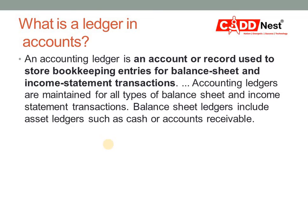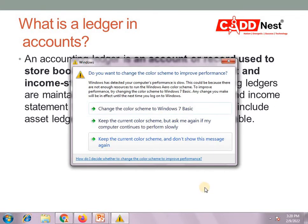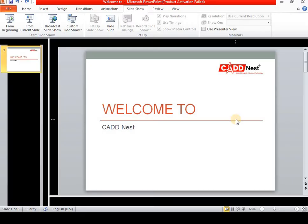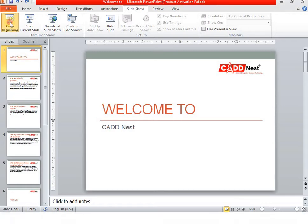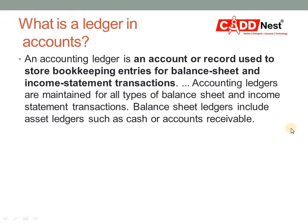Balance sheet ledgers include asset ledgers such as cash or accounts receivable, and also many other types of ledgers. We can maintain these, and using ledger balances only, we are going to prepare accounting statements. This is what a ledger is basically.